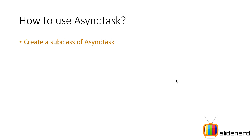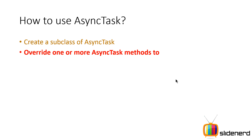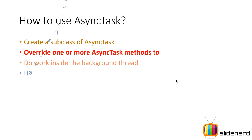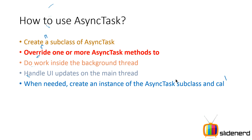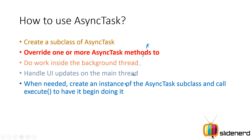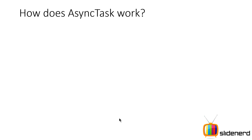What AsyncTask requires you to do is: first, create a subclass of AsyncTask, and next, override certain methods of this class so you can define what needs to be done in the background thread and how you're going to update the UI thread. Then you create the proper subclass object and call the execute method on it.